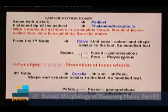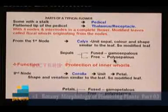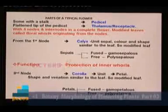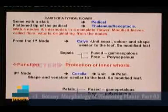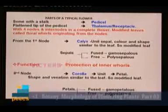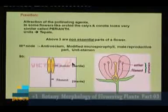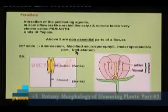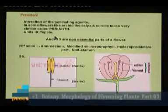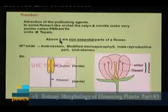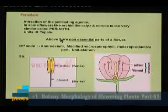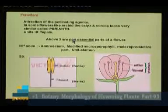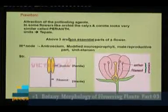Fused sepals are called gamosepalous. Free sepals are called polysepalous. Similarly, in some flowers the corolla is tube-like, meaning the petals are fused — called gamopetalous. In some flowers, for example rose, the petals are free — called polypetalous. In some flowers like orchids, the calyx and corolla look very similar; if undifferentiated they are called the perianth, and the units are called tepals. Either the perianth or the calyx and corolla are present. These three are the non-essential parts of a flower — not the gamete-producing parts.